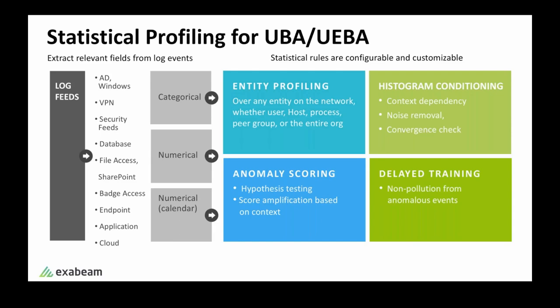Statistical profiling for UBA — the concept is simple: profile entity behavior using historical data and measure deviation from the norm, but there is a lot of art to it. When we say UBA, the entities to profile are not just about users. To do UBA right, Exabeam must profile all network entities including hosts, machines, and applications or processes. Some people say UBA, some say UEBA where the E stands for entity, as if these are two different types of analytics. From my perspective, these are marketing terms — UBA has always been about behavioral monitoring of any entities, not just users.